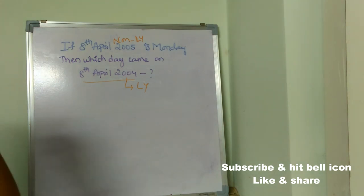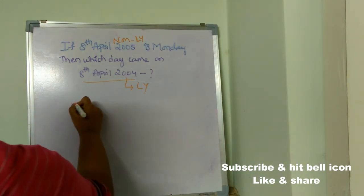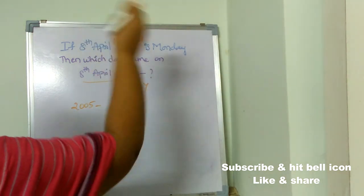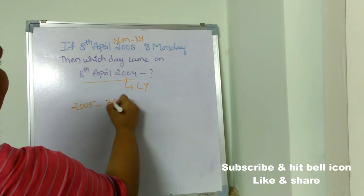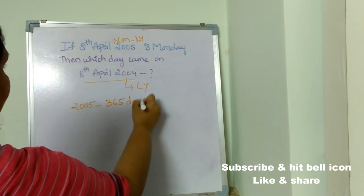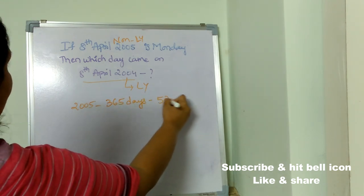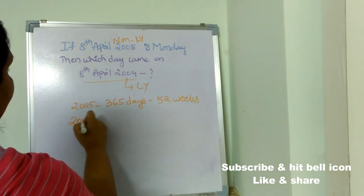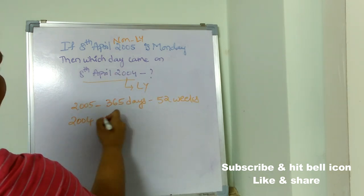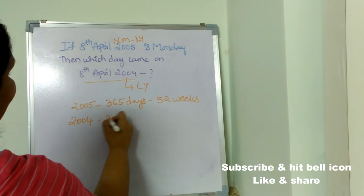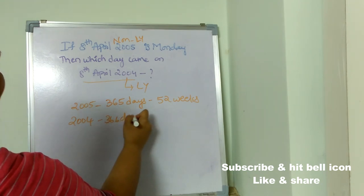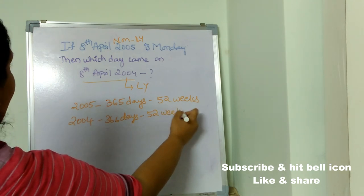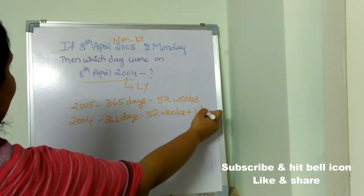Since 2005 is a non-leap year, it has only 365 days, which means 52 weeks. And 2004 being a leap year has 366 days, which means 52 weeks plus one odd day.